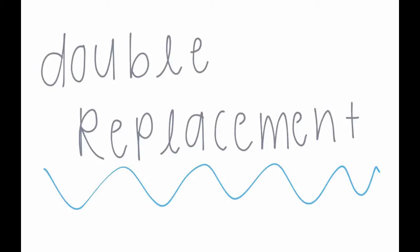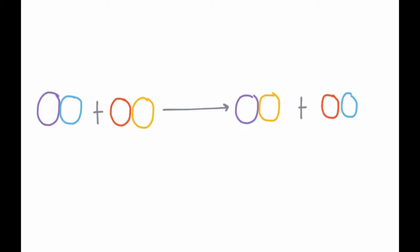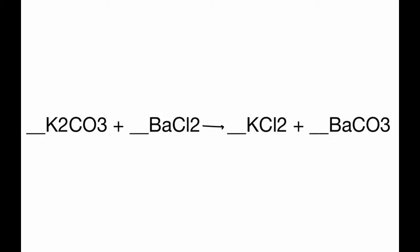This is going to explain double replacement reactions. In a double replacement reaction, we have two sets of compounds adding together that yield two different sets of compounds. This is an example because the K switches partners — on the left side it starts with CO₃ and ends with Cl, and on the other side the Ba starts with Cl and ends with CO₃.